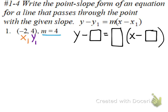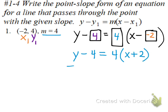So we're substituting in: in place of x-sub-1, put negative 2. In place of y-sub-1, put 4. And in place of m, put 4. Now anywhere we see minus a negative, we'll have to rewrite it. So x minus a negative 2, we'll rewrite as x plus 2. Minus a negative is the same as adding a positive.